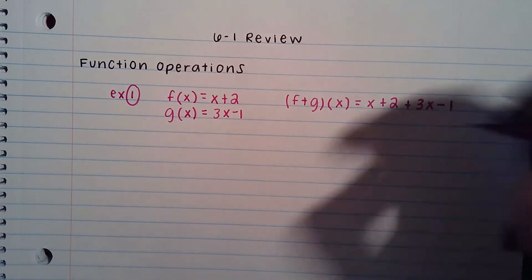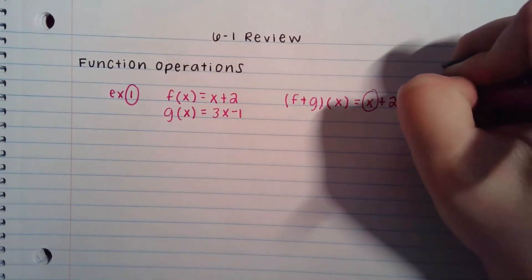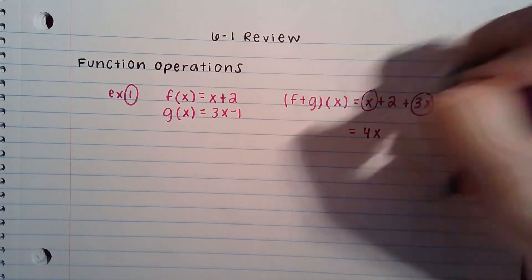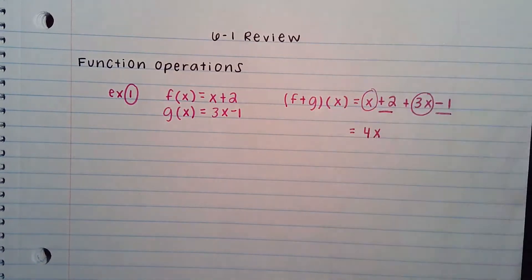x plus 2 plus 3x minus 1. Combine any like terms. x can be combined with 3x, which gives you 4x plus 1.